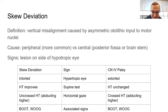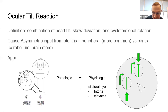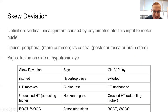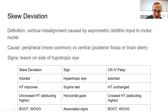Skew deviation is important to distinguish from fourth nerve palsy. Use BOOT and WOOG and you'll typically be okay. On OKAPS, skew deviation won't mimic fourth nerve in real life the way it might, but the incyclotorsion versus excyclotorsion distinction is the key differentiator.